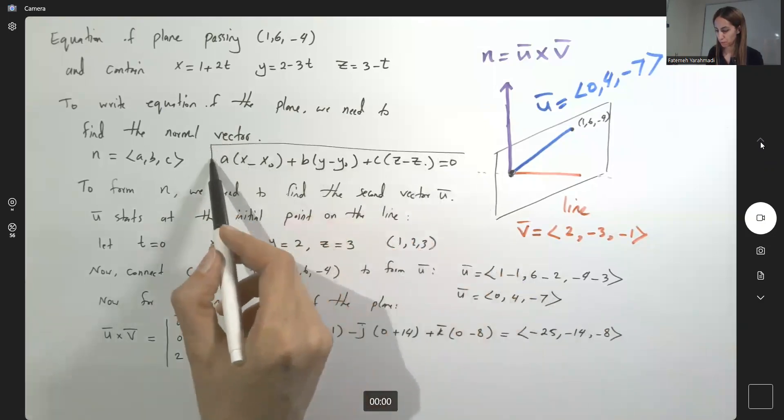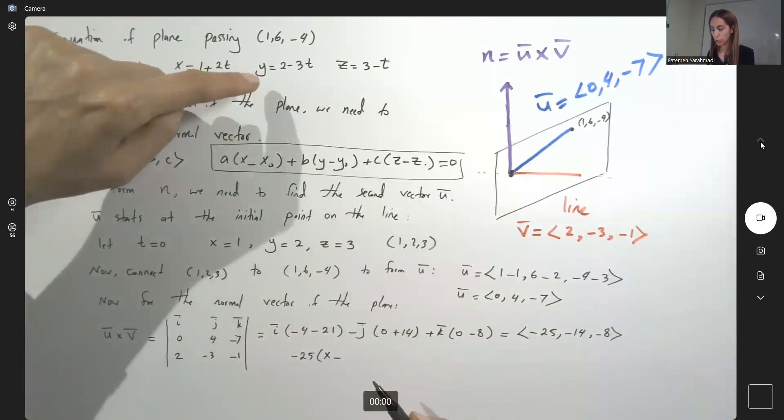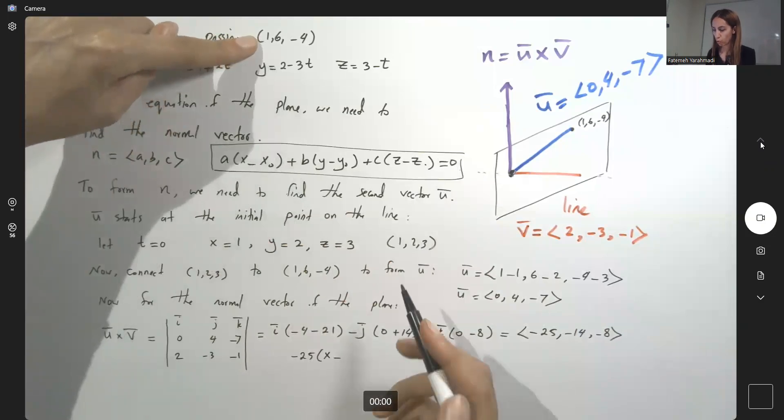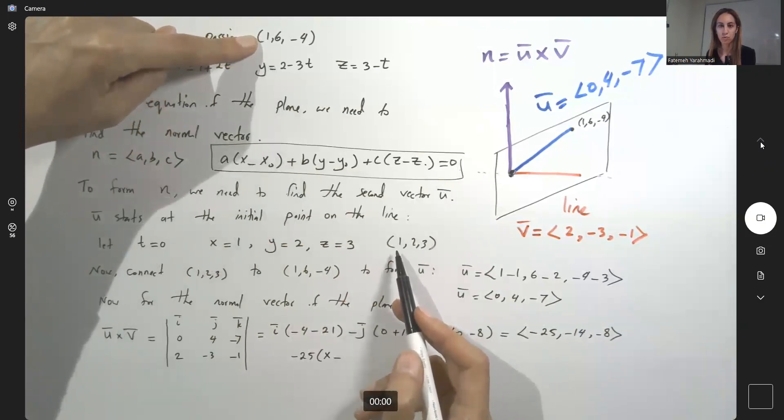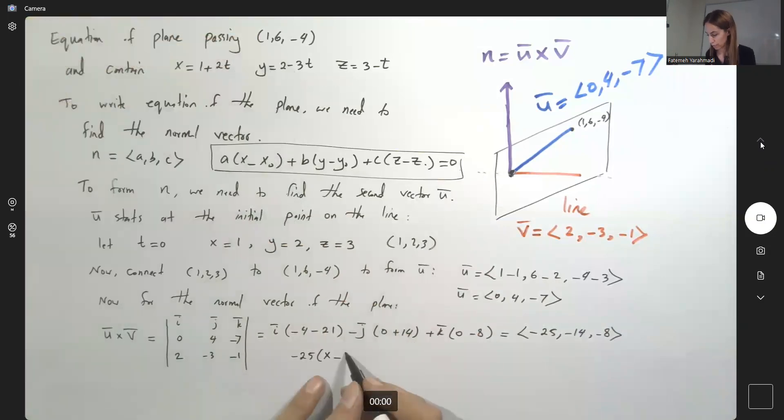Now follow the formula. You have a which is negative 25 times x minus x sub 0. You can use this point or that point, it doesn't matter which one, whichever is easier to work with. x minus 1, and here you have negative 14 times y minus 6 and minus 8 times z plus 4 equal to 0, and now you need to simplify.